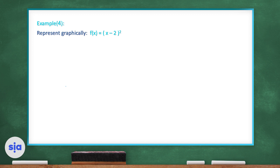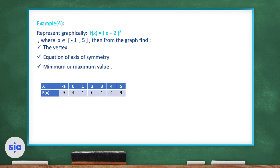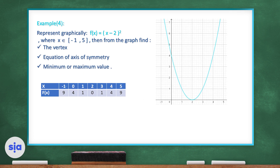Example four: f(x) = (x - 2)², where x belongs to the closed interval from -1 to 5. Here's the table of values and its graph. The vertex is (2, 0), so the axis of symmetry is x = 2, and since the parabola is U-shaped, it has a minimum value of y = 0.